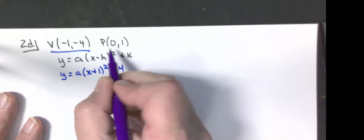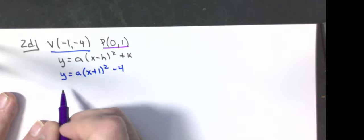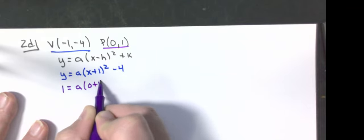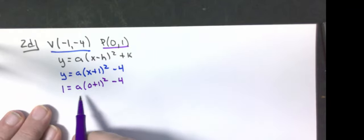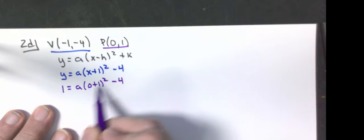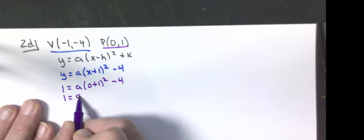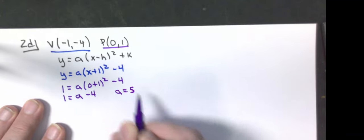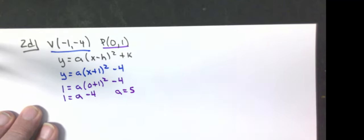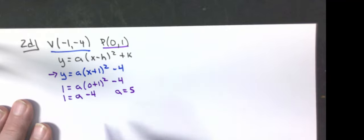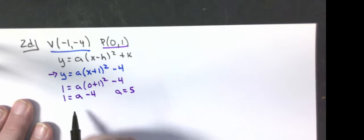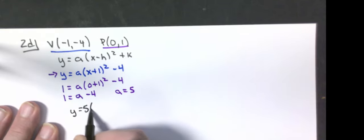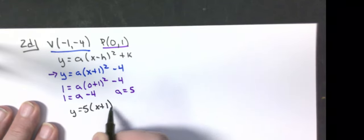Substituting the point (0, 1): 1 equals a times (0+1) squared minus 4. Since 1 squared is 1, I get 1 equals a minus 4. Adding 4 to both sides gives a equals 5. So the final equation is y equals 5 times x plus 1 squared, minus 4.